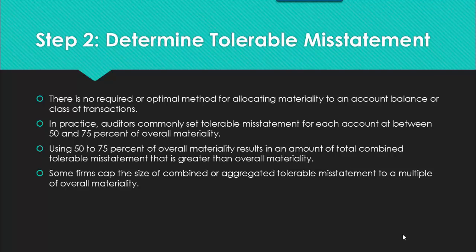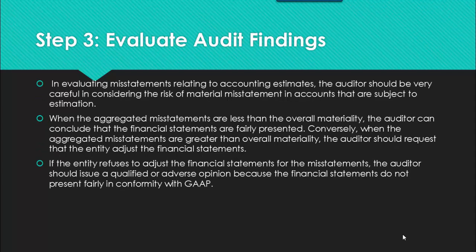Once we've determined the overall materiality, we then want to determine the tolerable misstatement. Tolerable misstatement applies to account balances as well as classes of transactions. In practice, auditors commonly set the tolerable misstatement for each account at between 50% and 75% of the overall materiality. Using 50% to 75% will result in a combined amount that is greater than the overall materiality. Some firms cap the size of the combined aggregate tolerable misstatement to a multiple of the overall materiality.